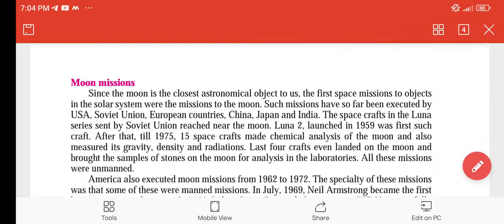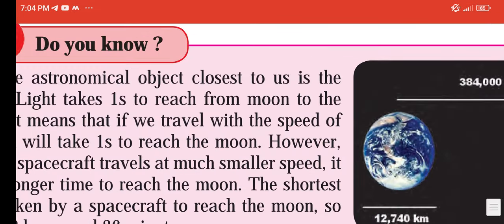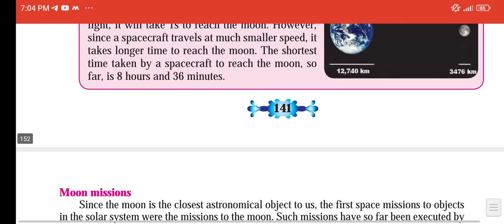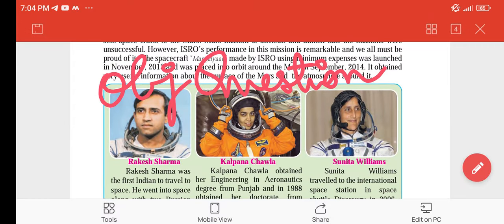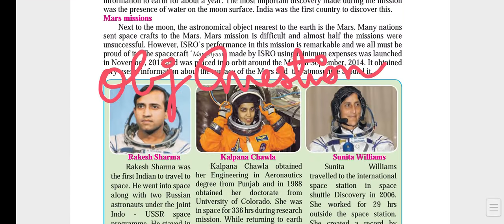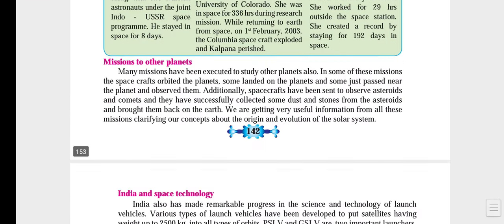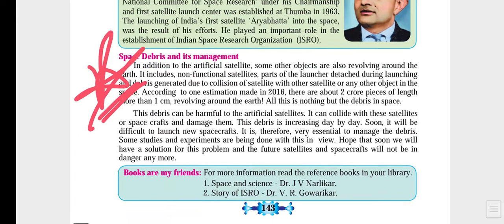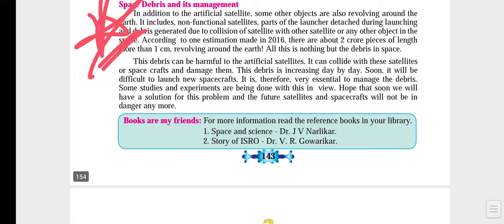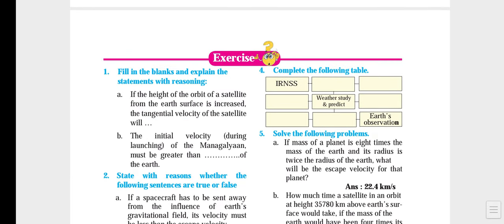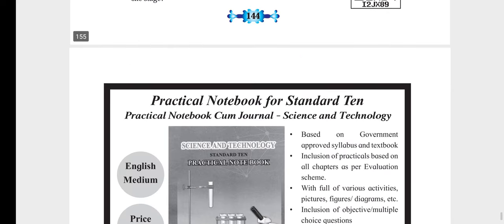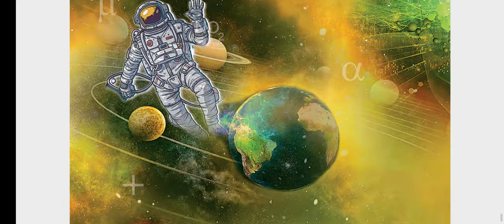On page number 141 the pink box gives the distance of the moon from the earth — revise it once. Objective questions can come from page number 142 — make sure you revise it without losing any time so you can gain marks. If anything comes from that box on space debris — debris meaning space junk — revise it and you will get marks.